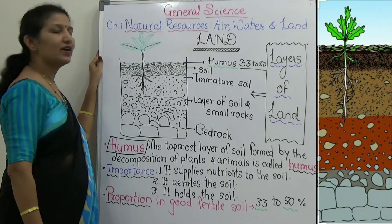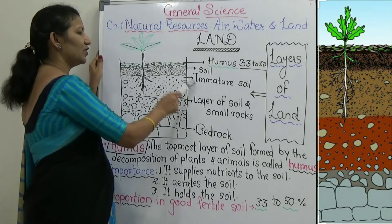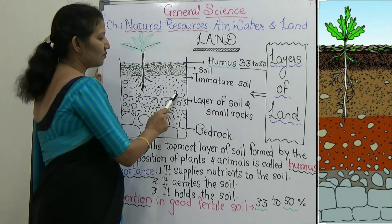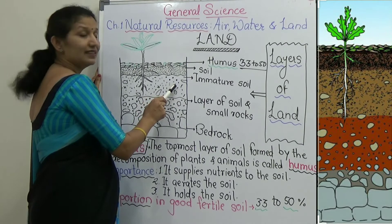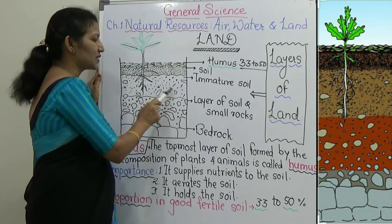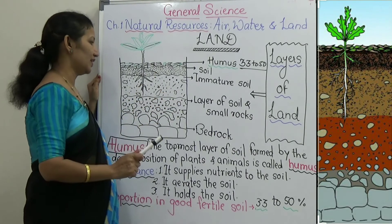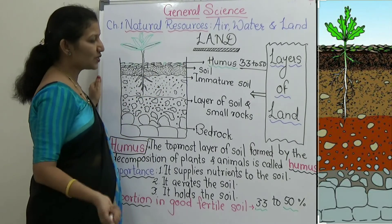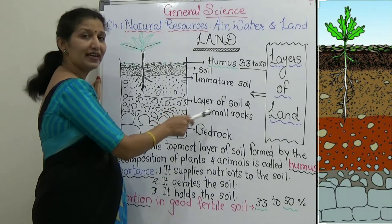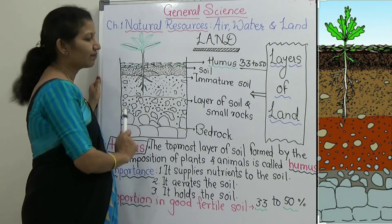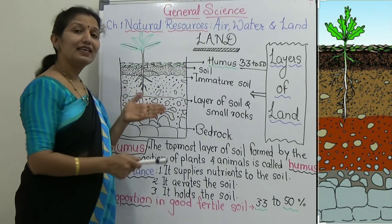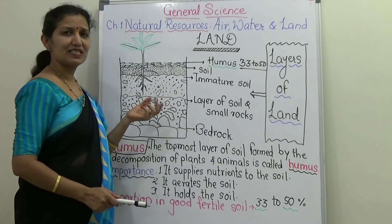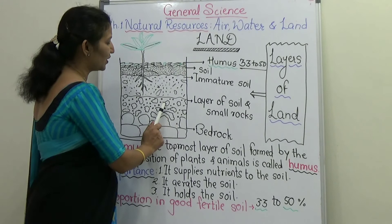Next to humus is the layer of soil and immature soil. Immature soil is defined as the layer of land full of sand, small rocks, soil, insects, and microbes. The proportion of soil is more in this layer. Below that is the layer of bedrock — where the proportion of soil decreases and the proportion of big rocks increases. Small rocks and big rocks are prominent in this layer.